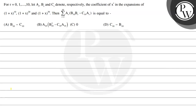Let's read the given question. The question states that for r equal to 0, 1, and so on up to 10, let ar, br, and cr denote respectively the coefficient of x to the power r in the expansion of (1+x)^10, (1+x)^20, and (1+x)^30. Then summation of ar multiplied by (b10·br minus c10·ar), where r is varying from 1 to 10, is equal to which option?